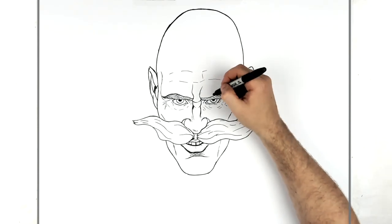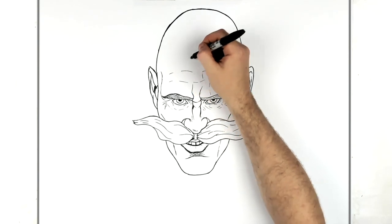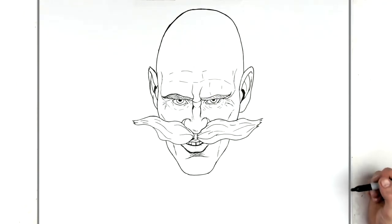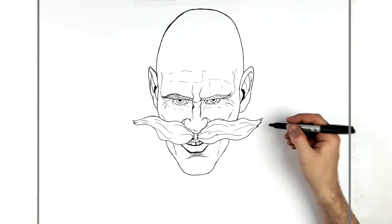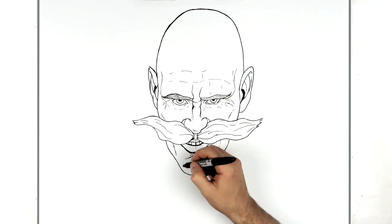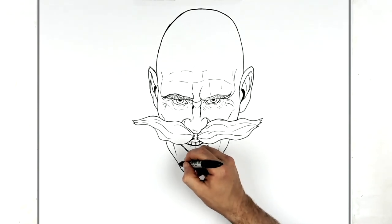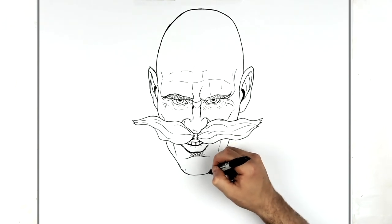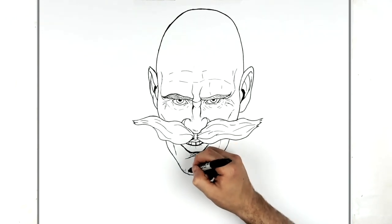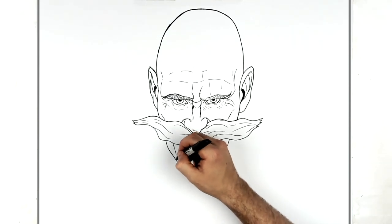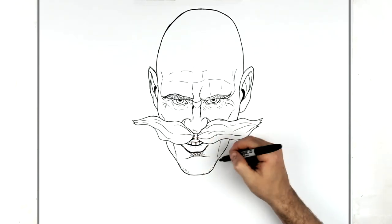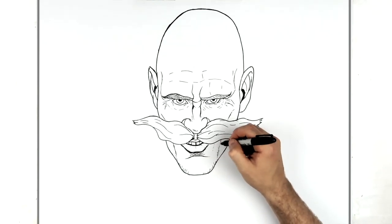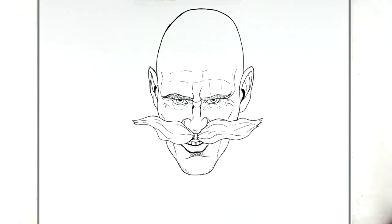Some wrinkle lines going up this way — just light lines. There's a little bit of stubble on his chin, like beard lines just down here. There's not too many but you can see them, so might as well draw them in.